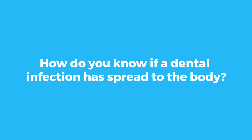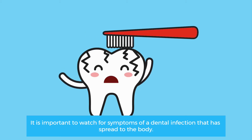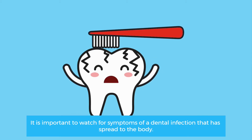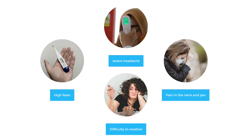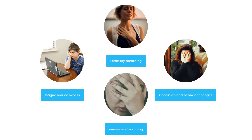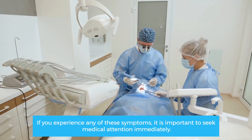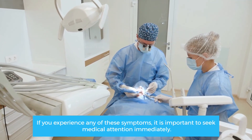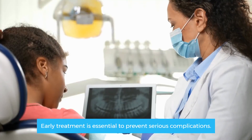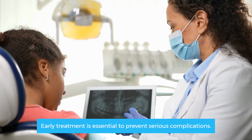How do you know if a dental infection has spread to the body? It is important to watch for symptoms of a dental infection that has spread to the body. Some of the common symptoms include high fever, severe headache, pain in the neck and jaw, difficulty swallowing, difficulty breathing, fatigue and weakness, nausea and vomiting, and confusion and behavior changes. If you experience any of these symptoms, it is important to seek medical attention immediately. Early treatment is essential to prevent serious complications.